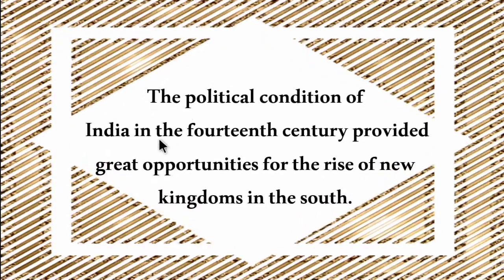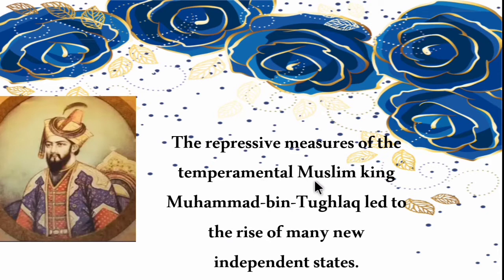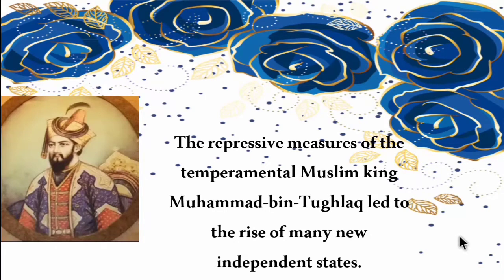The political condition of India in the 14th century provided great opportunities for the rise of new kingdoms in the south. The repressive measures of the temperamental Muslim king Mohammed bin Tughlak led to the rise of many new independent states. We have seen in the Delhi Sultanate lesson that Mohammed bin Tughlak shifted his capital from Delhi to Daulatabad (Devagiri) and back, and was a very cruel ruler. His cruelness created conflict between the people and the king, leading to the rise of many new independent states.